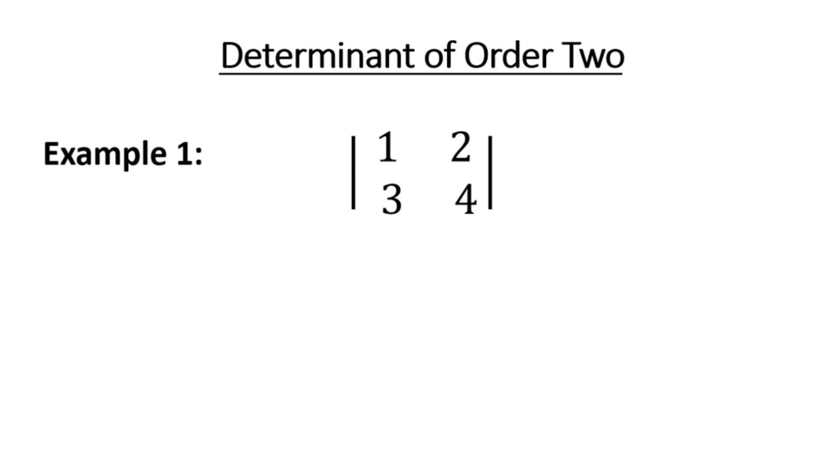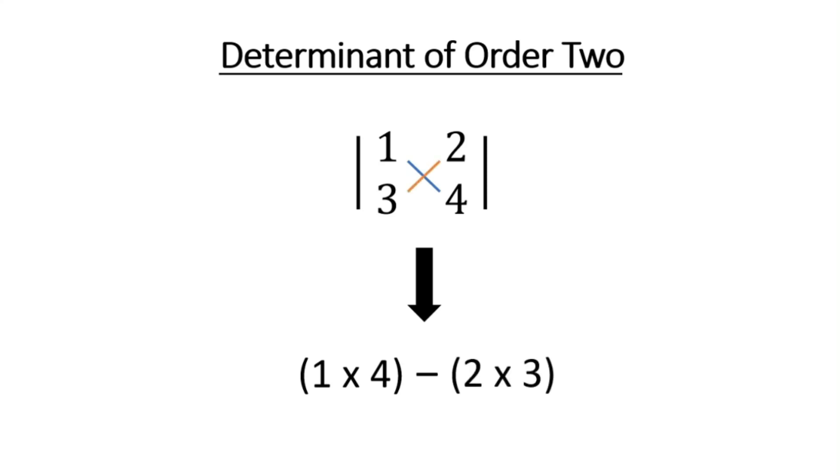elements from left to right, that is 1 into 4, minus product of diagonal elements from right to left, that is 2 into 3. 1 into 4 is 4 minus 2 into 3 is 6. 4 minus 6 equal to